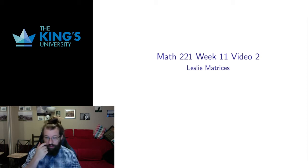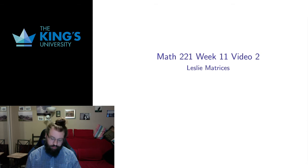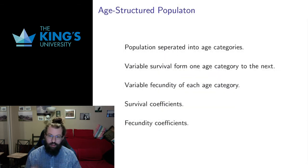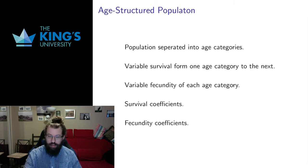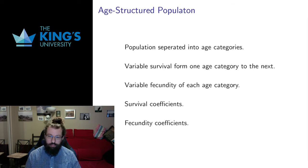This is a model called the Leslie matrix, and it measures the behavior of an age-structured population. So instead of doing population dynamics where I count the entire population, I now want a population that's separated into age categories.